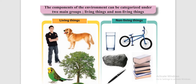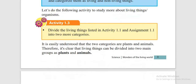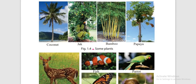Did you understand what living things and non-living things are? Let's see some types of living things. The main groups of living things are three: plants, animals and microorganisms.